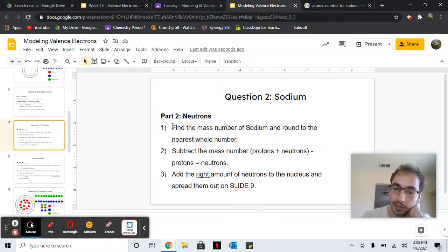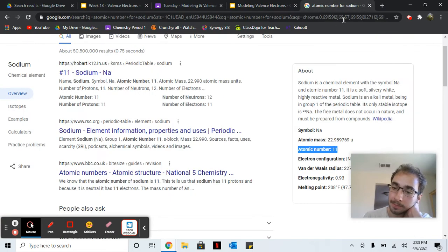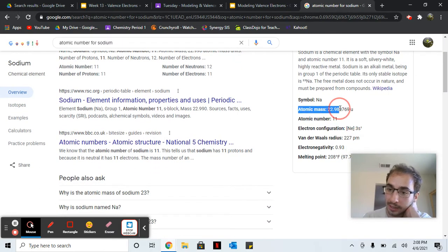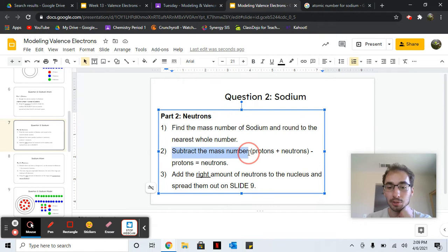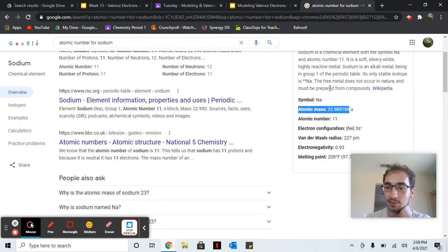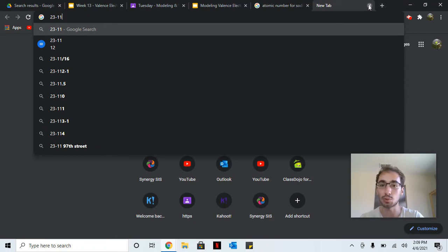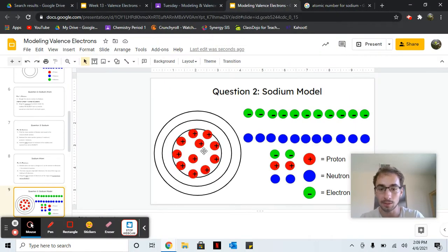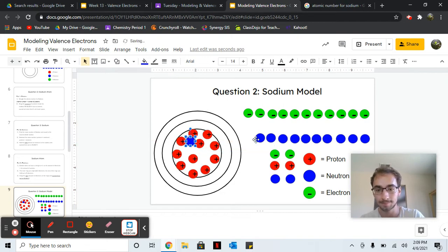Next is the neutrons. Find the mass number for sodium and round to the nearest whole number. So mass 22.989769, you would round that up to 23. Subtract the mass, 23 minus the protons. So it's 23 minus 11. 23 minus 11 is 12. So you'll need 12 neutrons now. Just put them wherever you can. It's okay if they're touching. You really can't avoid that.